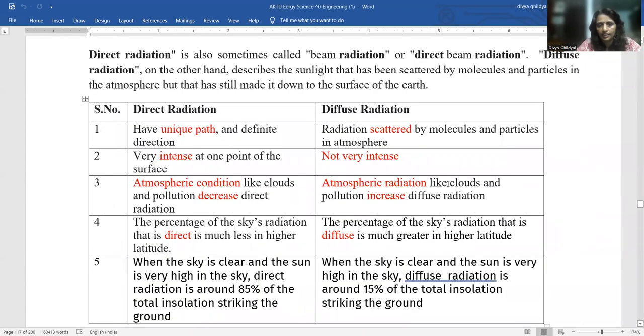See, direct means anything falling directly. Diffused means scattered in all directions. Simply let me quickly tell you this answer because this is going to be a 10 mark question and you can very easily get 10 marks if you make this table.